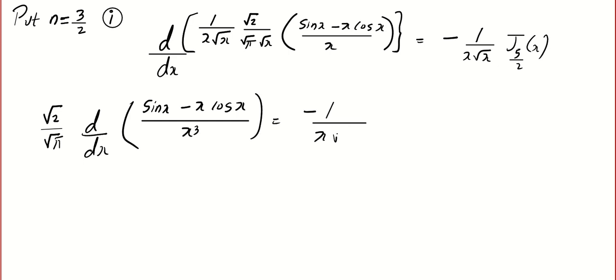x³ will come here, is equal to -1/(x√x) into J5/2(x). Now I'm going to extract our J5/2, so I get J5/2(x) = -√2/√π and this x√x will go to this place, so we have x·√x.